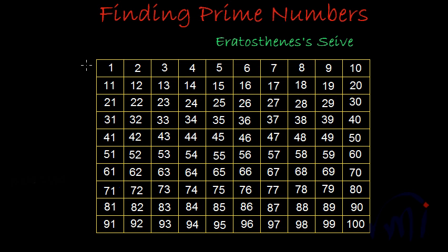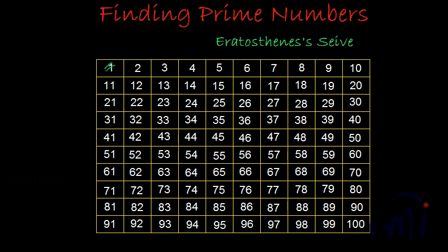We will start from the first row and in each row go from left to right. We will take numbers one by one and cross off all their multiples. We start from 1, which is a special number — it is neither prime nor composite — so we skip it. After 1 there is 2. Two is a prime number, and we have to strike off all the numbers which are multiples of 2, meaning all the even numbers, or every second number.